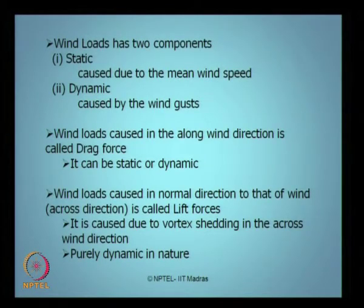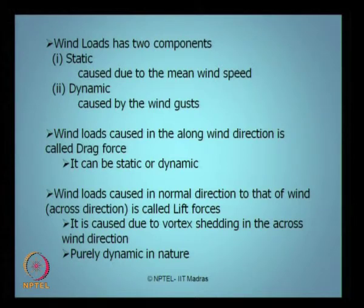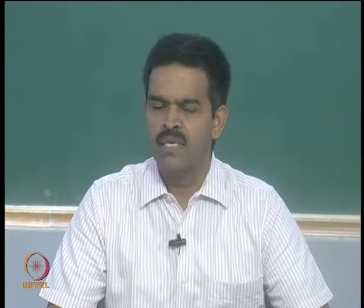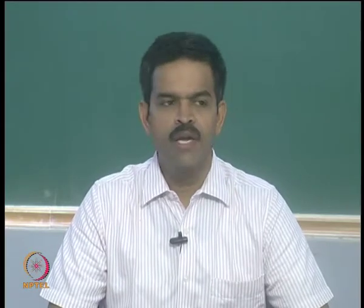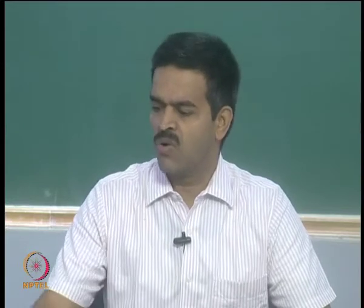Wind loads have two vital components. One is what we call the static component, caused due to the mean wind speed, and the other is the dynamic component, caused by gust wind. The wind loads in the along-wind direction are called drag forces, which can be either static or time-variant. Wind loads in the direction normal to the wind, which we call the across direction, generate what we call lift forces, essentially caused due to vortex shedding in the across-wind direction. This is purely dynamic in nature and strongly time dependent.